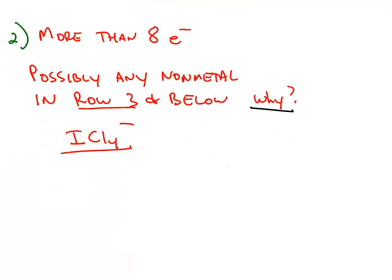However, there are much more exceptions that work the opposite way, which is more than eight electrons. Possibly any non-metal that's in row three or below is capable of having this, what's called an expanded octet.